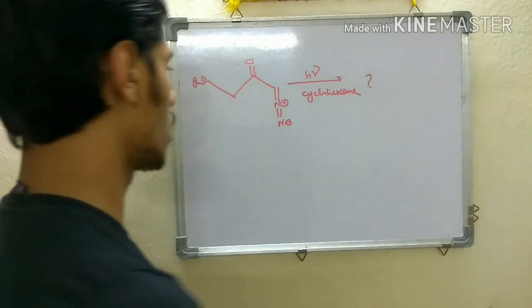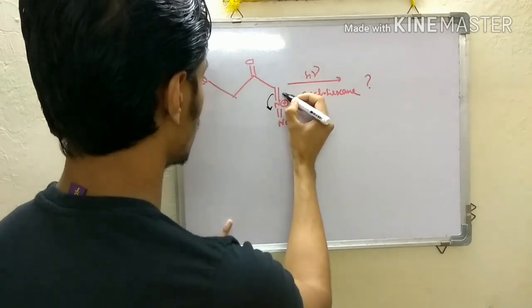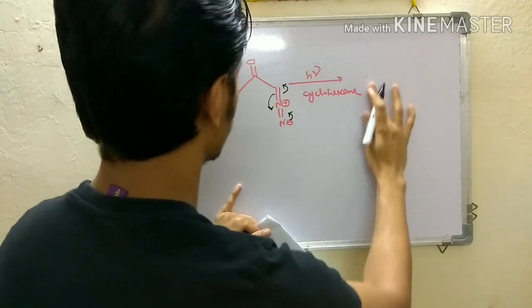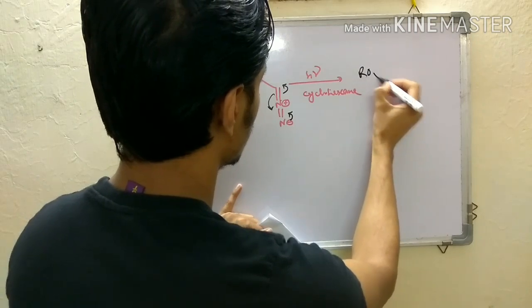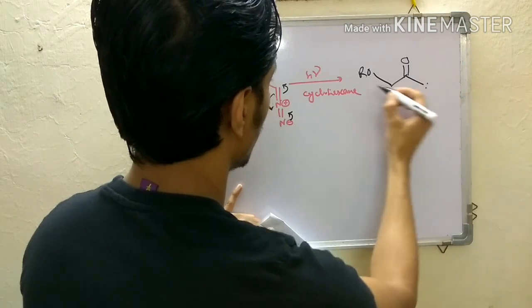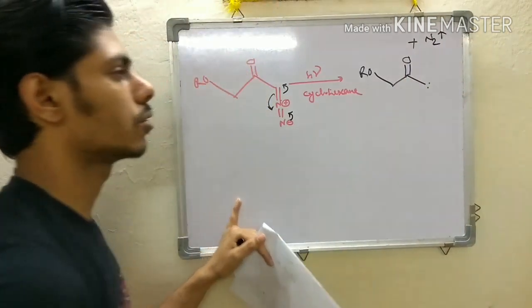So in presence of light, first this will decompose to give you the carbene. You will get a carbene and nitrogen gas will be eliminated.